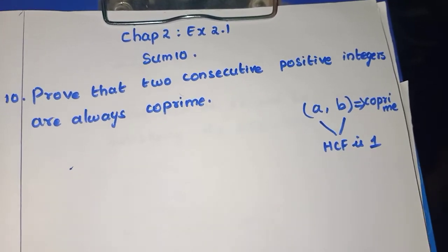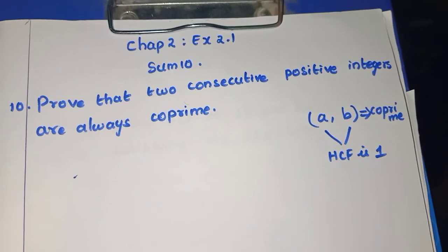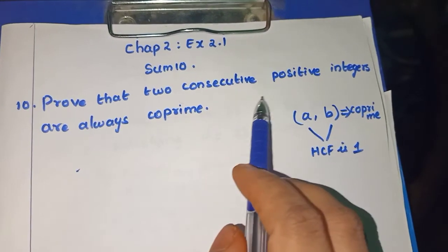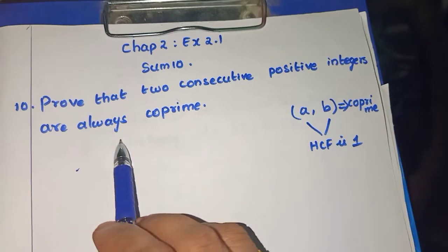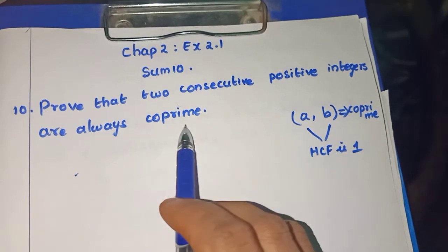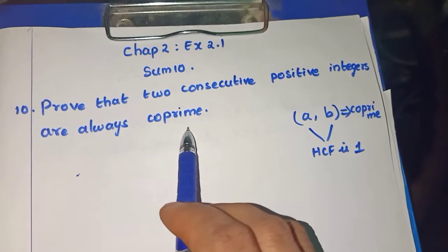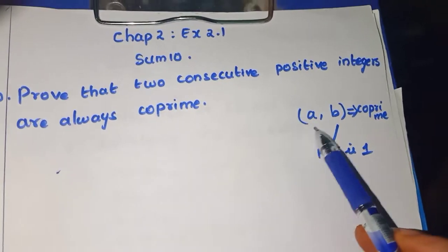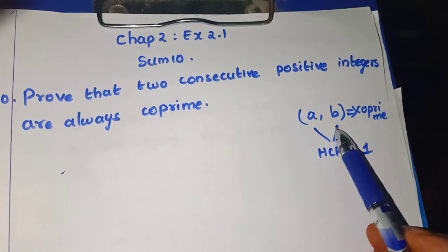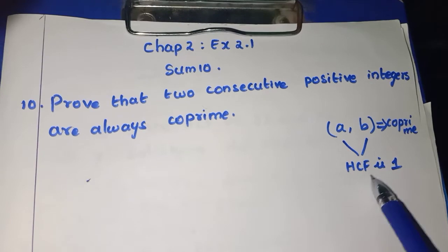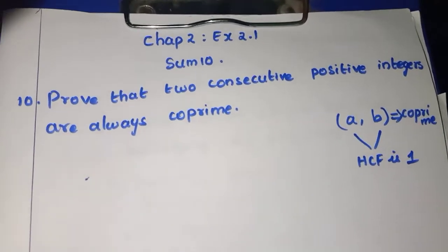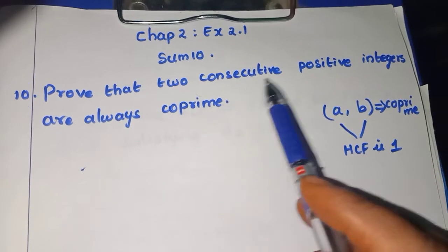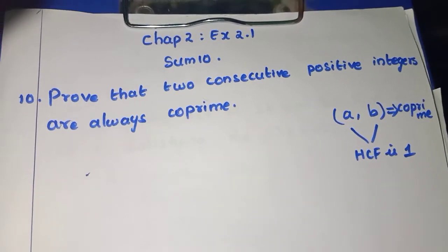Chapter 2, Exercise 2.1, Sum No. 10. Prove that 2 consecutive positive integers are always co-prime. You have learnt the term co-prime. Co-prime means when 2 numbers have HCF equal to 1. We have to prove that their HCF is 1, then we can say that 2 consecutive positive integers are always co-prime.